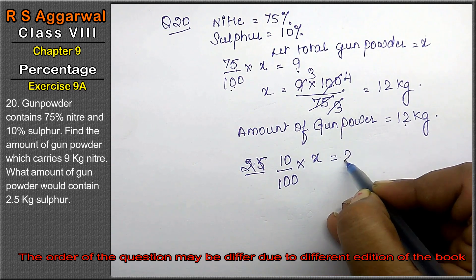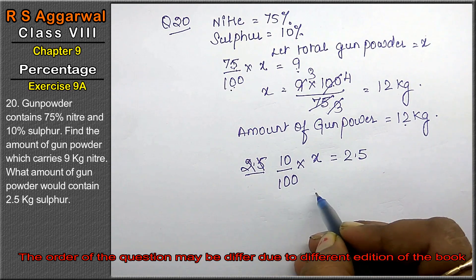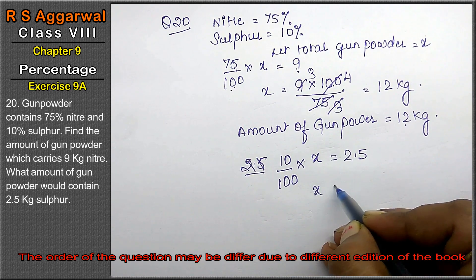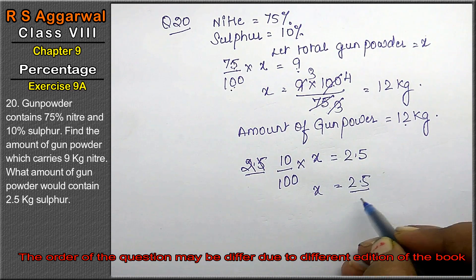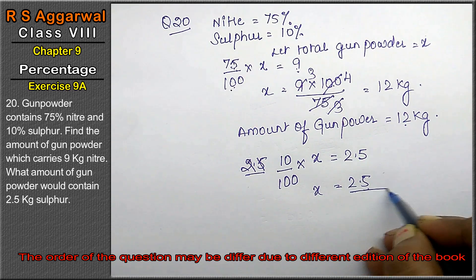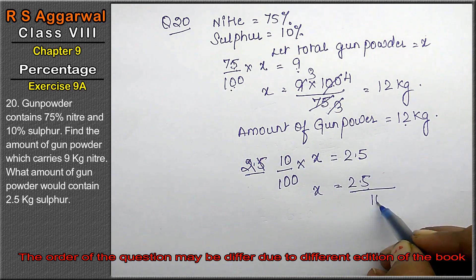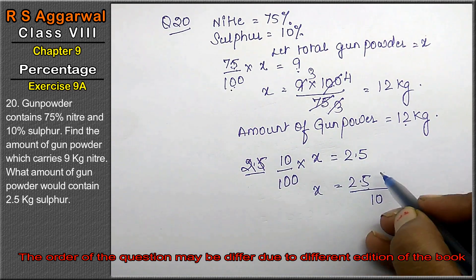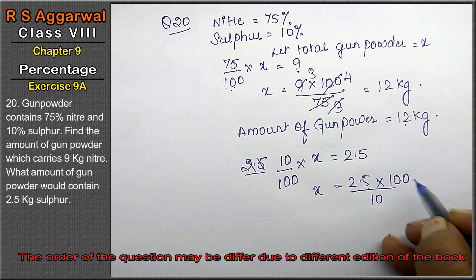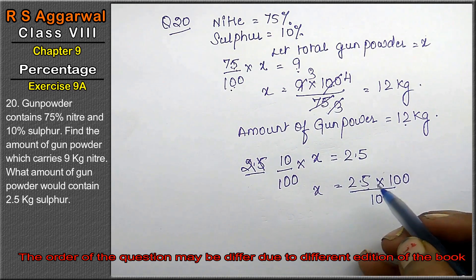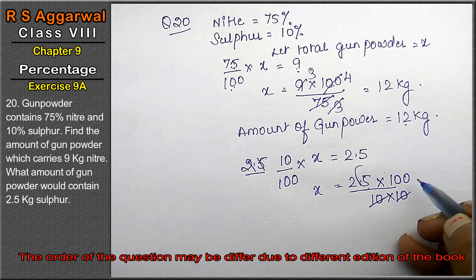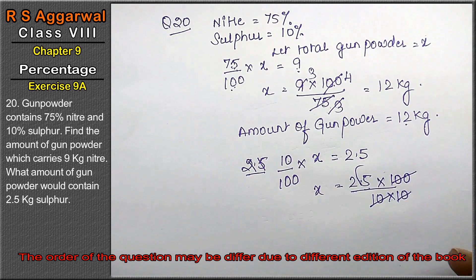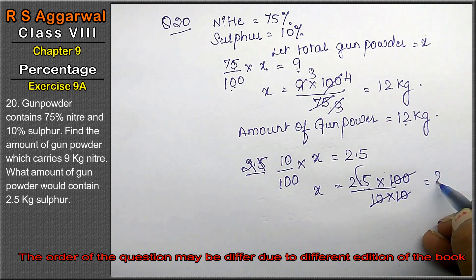So the equation is: (10/100) of total gunpowder = 2.5 kg. Rearranging, total gunpowder = 2.5 into 100 divided by 10. Removing the decimal — 2.5 into 10 is 25 — and dividing by 10, we get 25 kg.